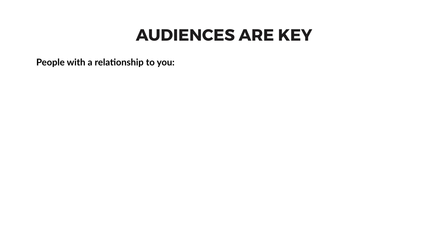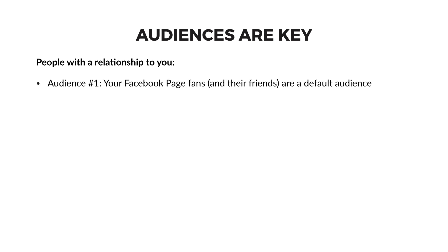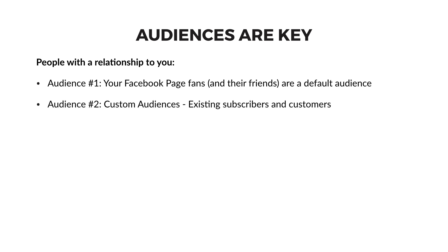The first three audiences are people who have an existing relationship with you on or off Facebook. First is your Facebook fans and their friends. If you've been building up a community, this is a great group to start with — you don't have to do anything else to prepare that audience for marketing. Second, Facebook lets you advertise directly to your database of customers or subscribers that you've gathered off Facebook. This group is frequently overlooked by new Facebook advertisers, but they come with a lower cost per click on average and, like your Facebook fans, are already familiar with you.